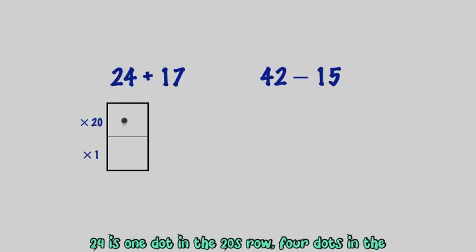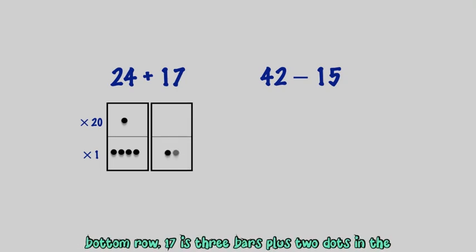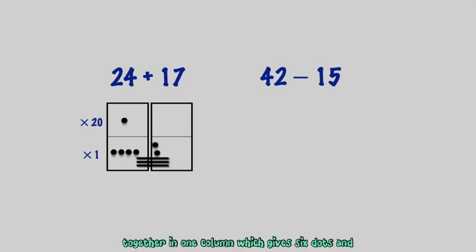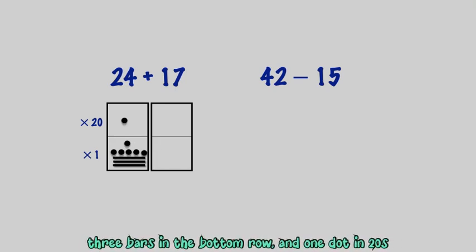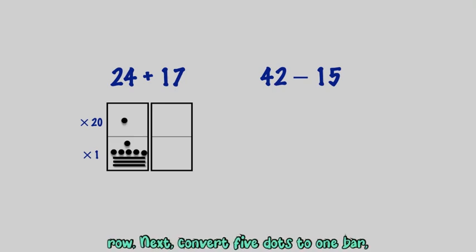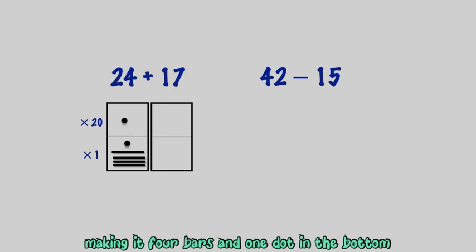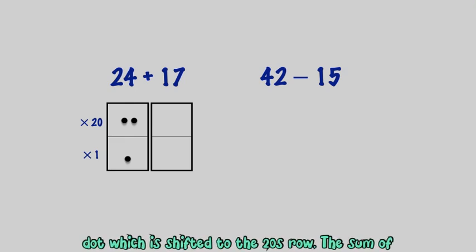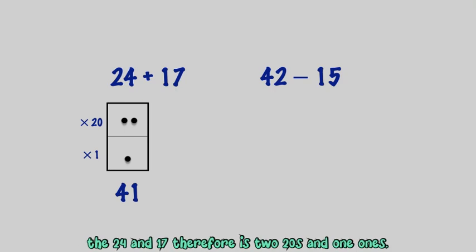For 24 plus 17: 24 is one dot in the 20s row and four dots in the bottom row. 17 is three bars plus two dots in the bottom row. First, pull the symbols together in one column, giving six dots and three bars in the bottom row, and one dot in the 20s row. Next, convert five dots to one bar, making four bars and one dot in the bottom row. Then four bars, which is 20, is converted to a dot shifted to the 20s row. The sum of 24 and 17 is therefore two 20s and one 1.